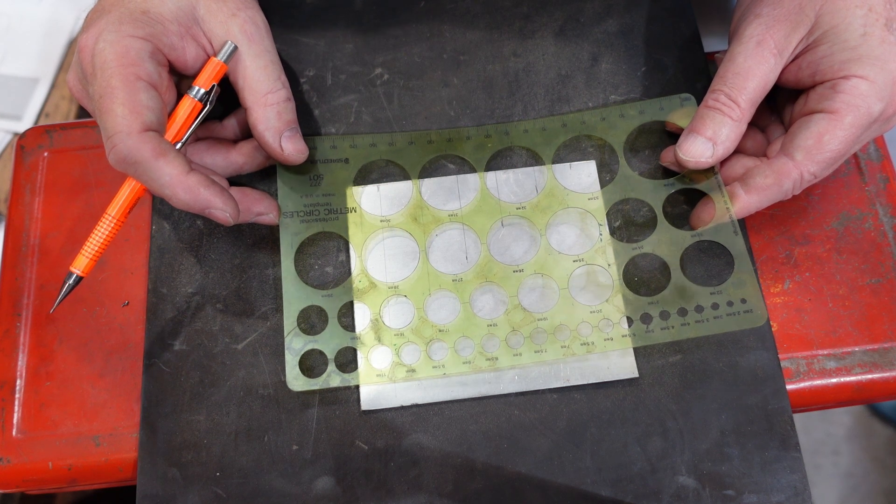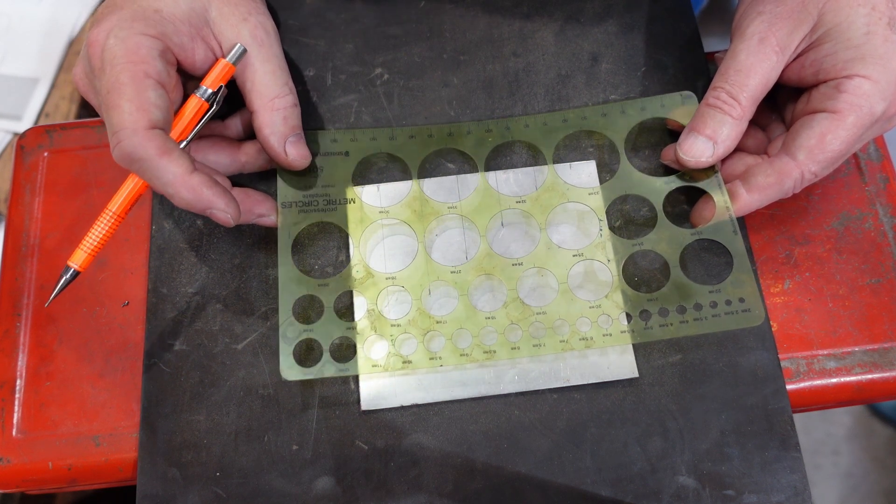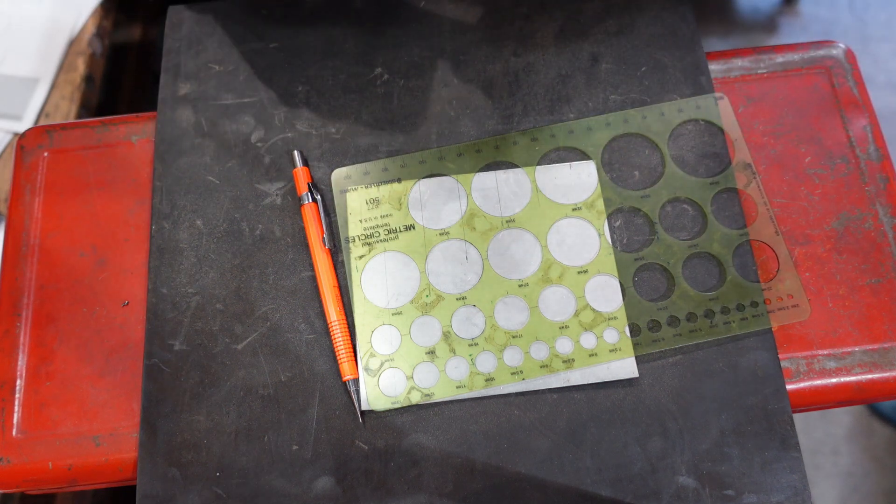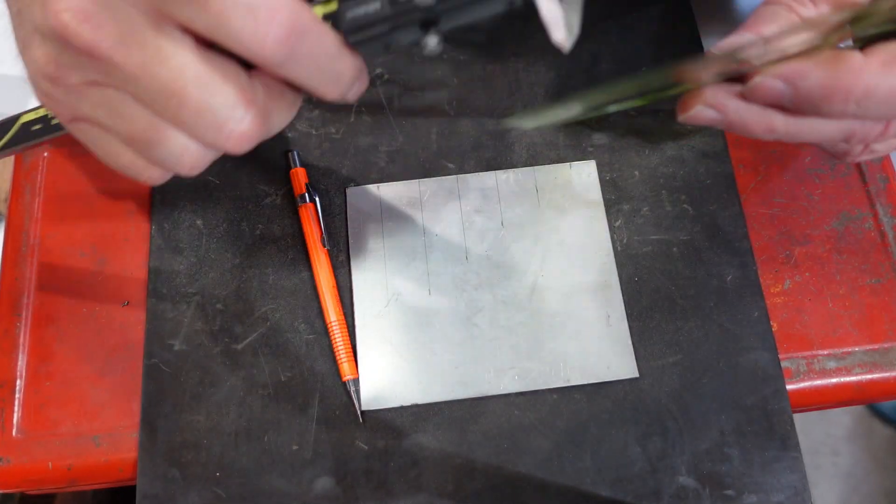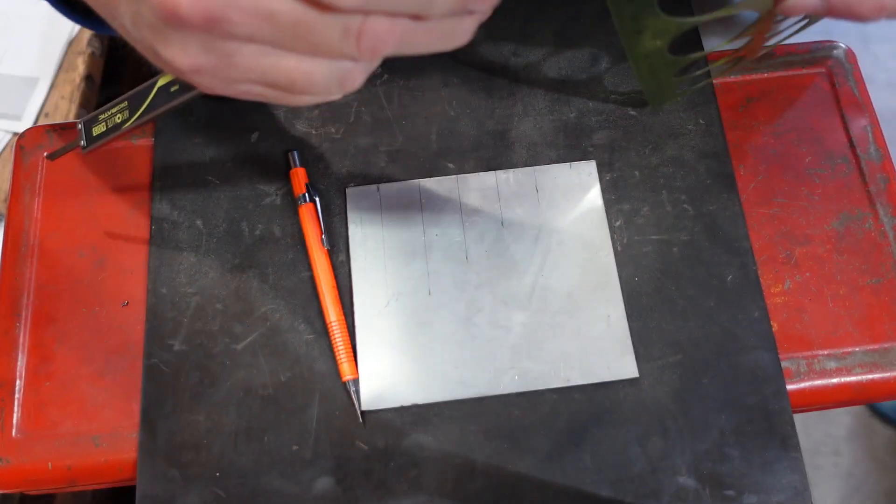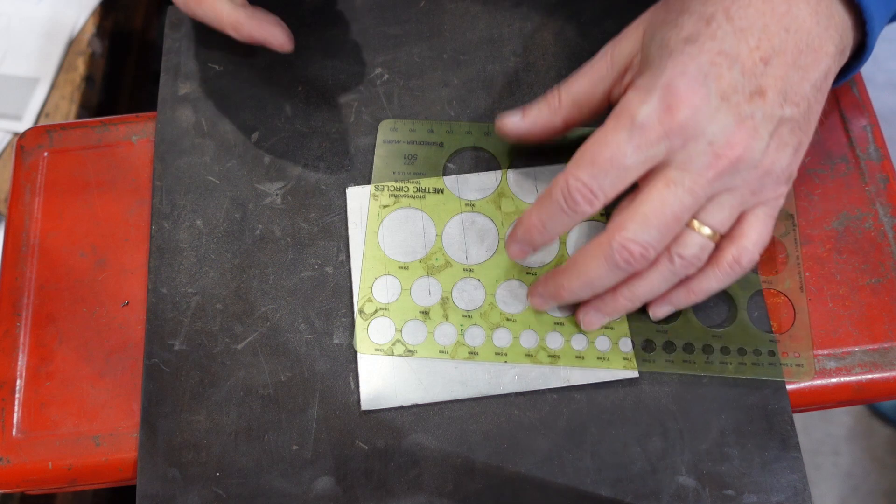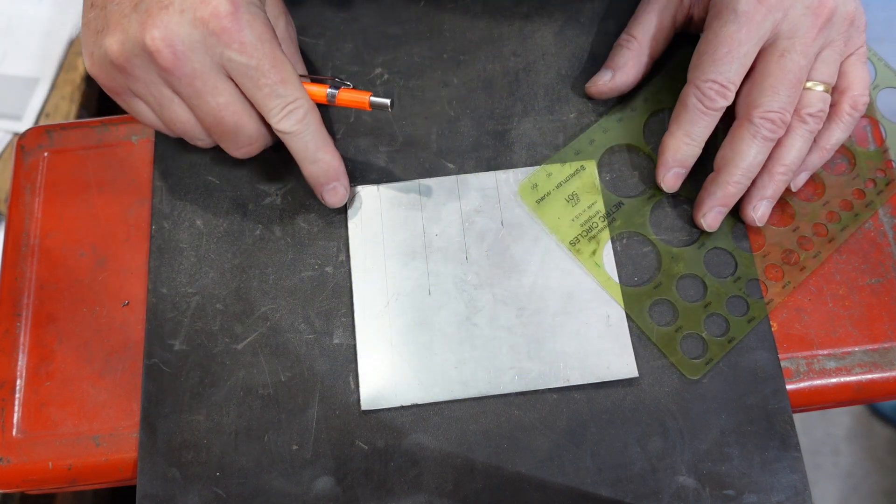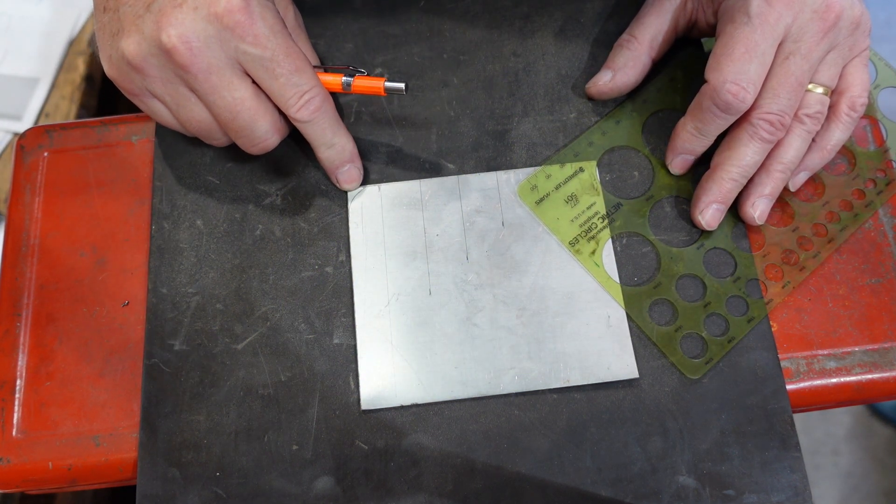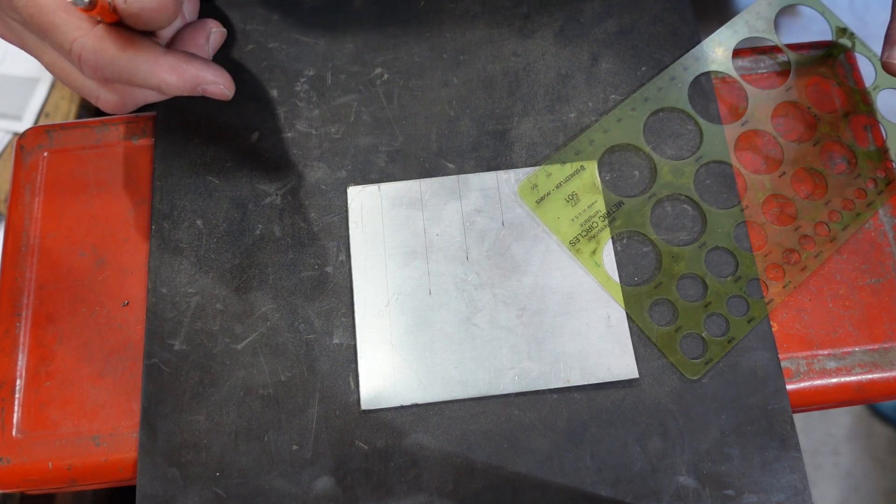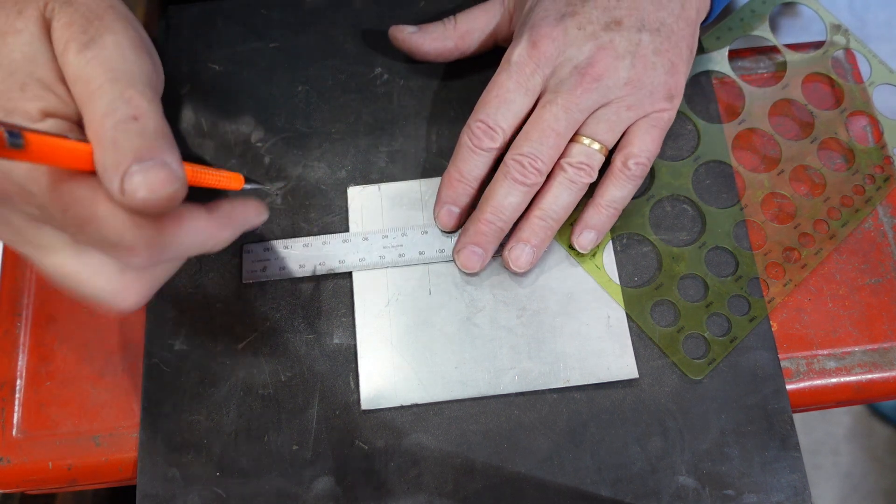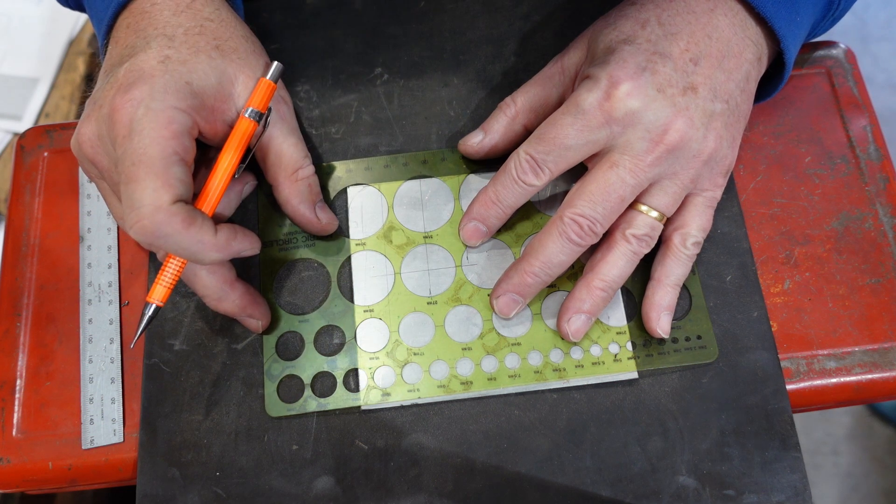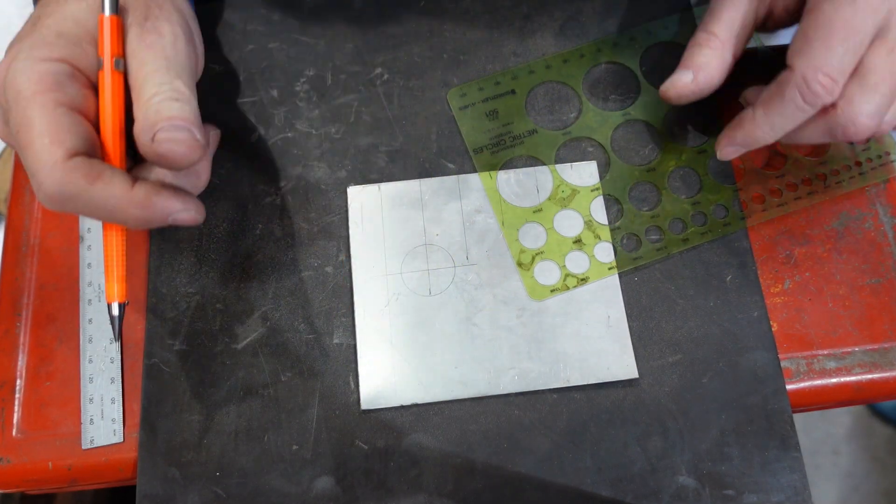One thing I've mentioned before is my circle template. I find this very easy for marking out radii and things like that but also measuring circles, bearing in mind there's a slight allowance for pencil on these things. So if I measure the 30 millimeter hole, that's 30.5 so it's designed for a pencil with a 0.5 lead. But if I want to put a radius on there, that's an R15 radius so I can use that. The classic use is if you've got two lines intersecting like that, you can line up the crosshairs here and that circle should be on the center there.